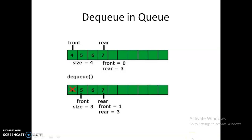Now let's look at the dequeue operation — deleting from the front end. With a queue of size 4, you delete from the front end — queue[front] is deleted. Since we are using an array (unlike a real queue where persons move forward), we simply increment front by one. So front becomes front plus one, and the front pointer moves to the next position.